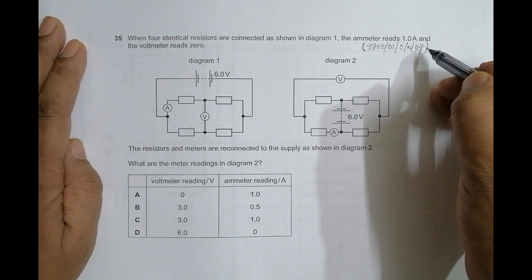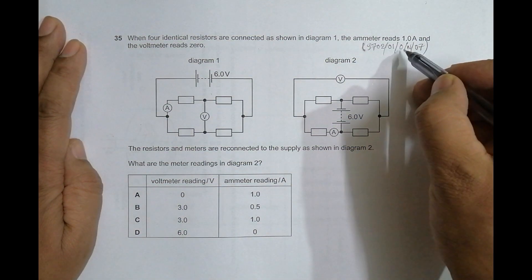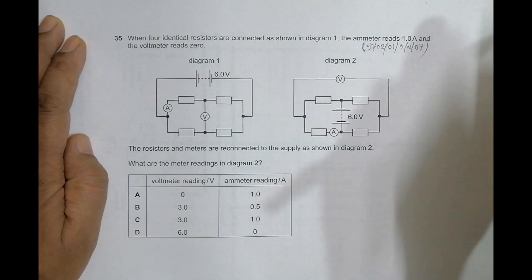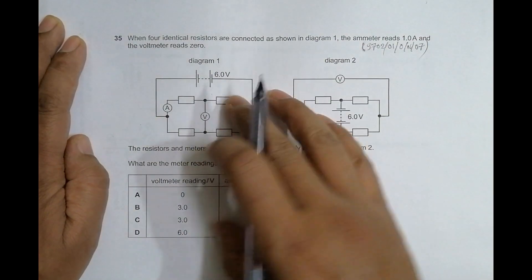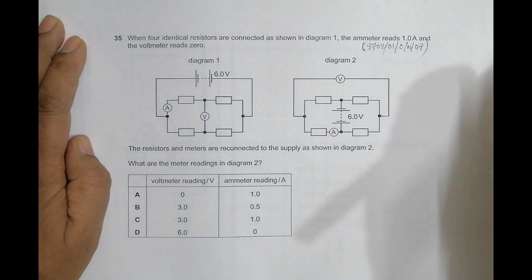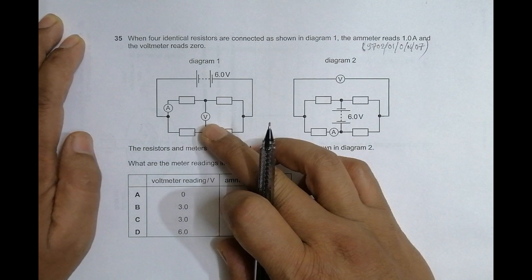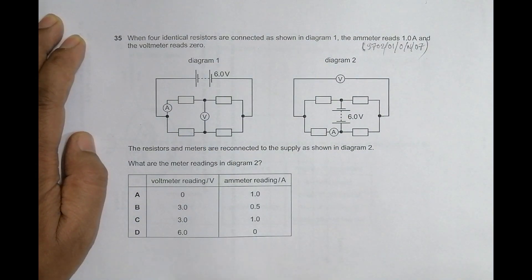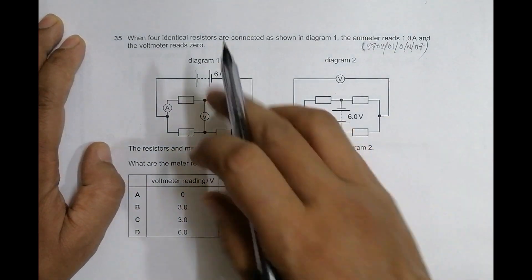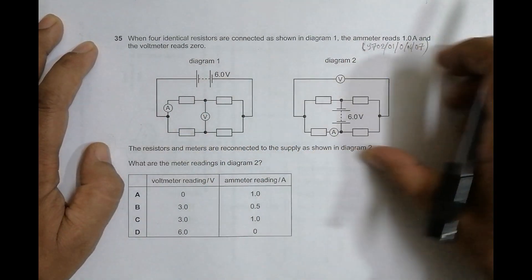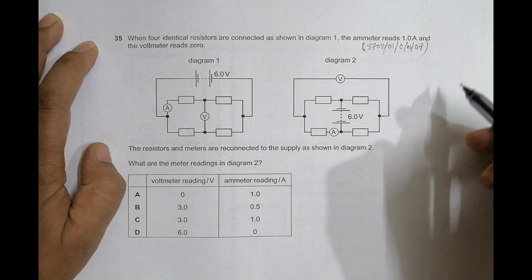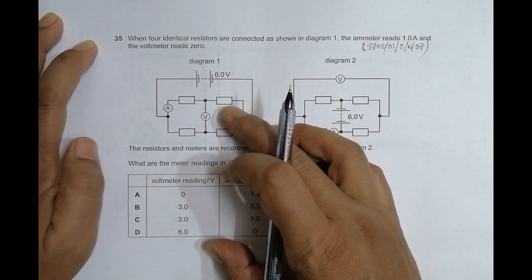Hello folks, today I have a question from the 2007 October/November Paper 1, question number 35. It is concerned with the chapter on current electricity. I have been asked by many students to post this — we did discussions in class about how to solve it — but making a video never came to mind. Today I accidentally had a glance at this question and decided it is now or never.